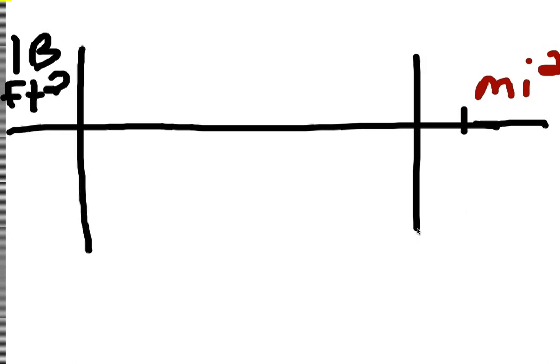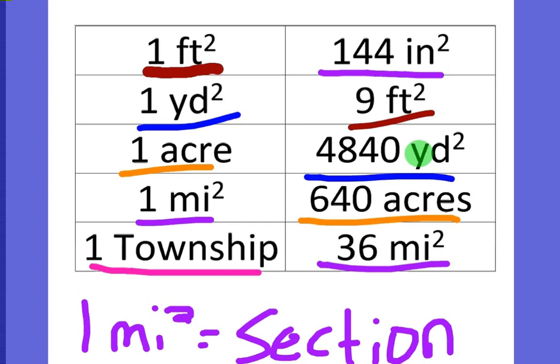But when you go to the chart, just start with square feet, look at the chart, and see what the next biggest thing from that is. Can anybody tell me, looking at the chart we made yesterday? Okay, if you look at the chart, the next thing up from square feet is square yards. And it says right there that there's nine square feet in a square yard.